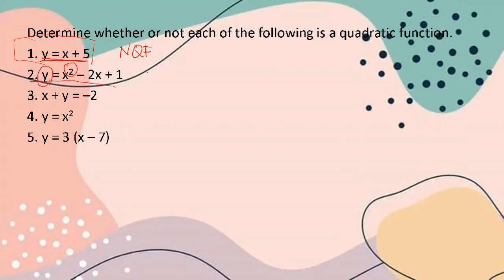Number three: x + y = -2 is not a quadratic function because there is no highest degree of two. Number four: y = x² is a quadratic function — even without the linear term or constant term, as long as there is the function symbol and the highest degree of two, it is quadratic.